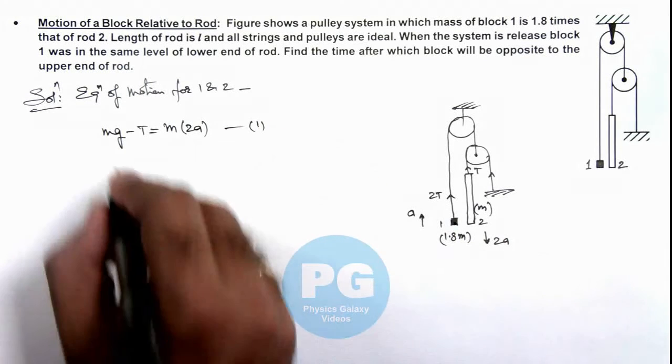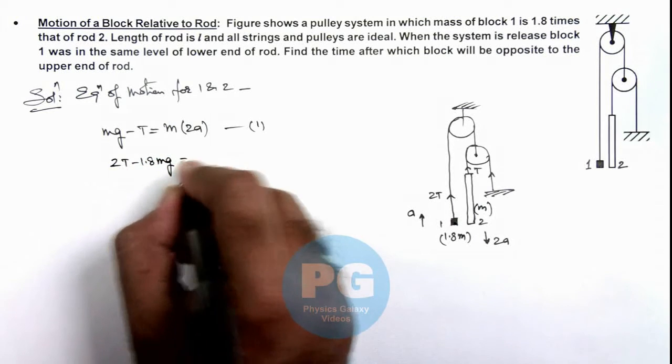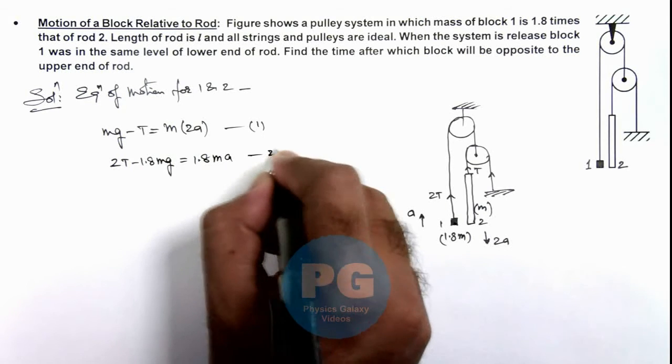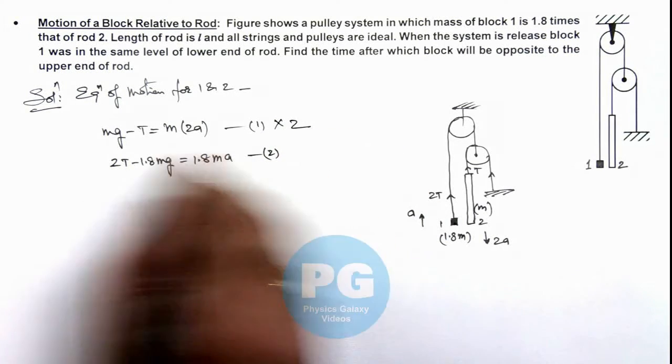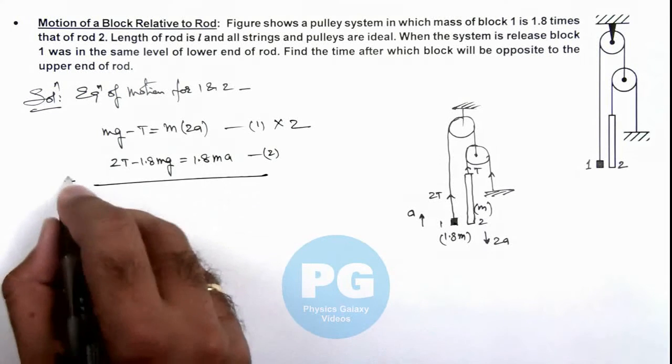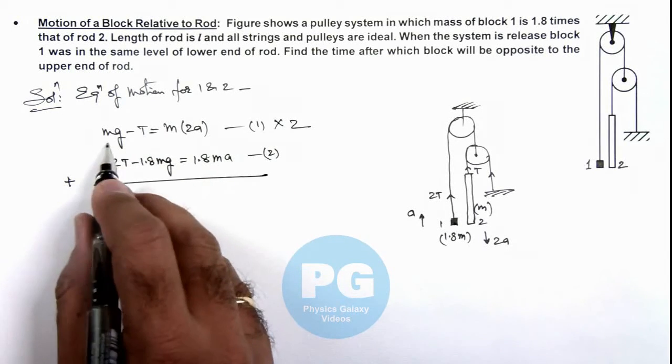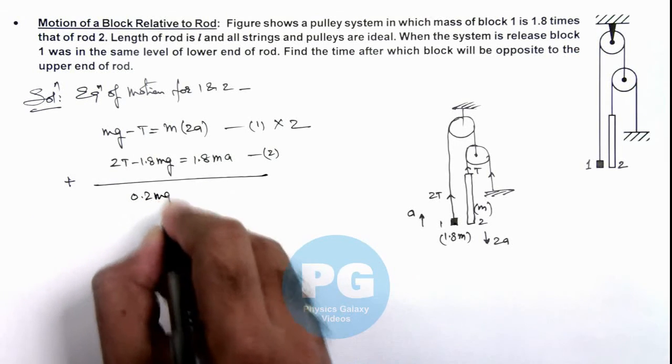And for block we can write 2T - 1.8mg = 1.8ma. This is our equation 2. So to simplify, we multiply this equation by 2 and we add the 2 equations, so this tension gets cancelled out. And this will give us 2mg - 1.8mg = 0.2mg, which is equal to...